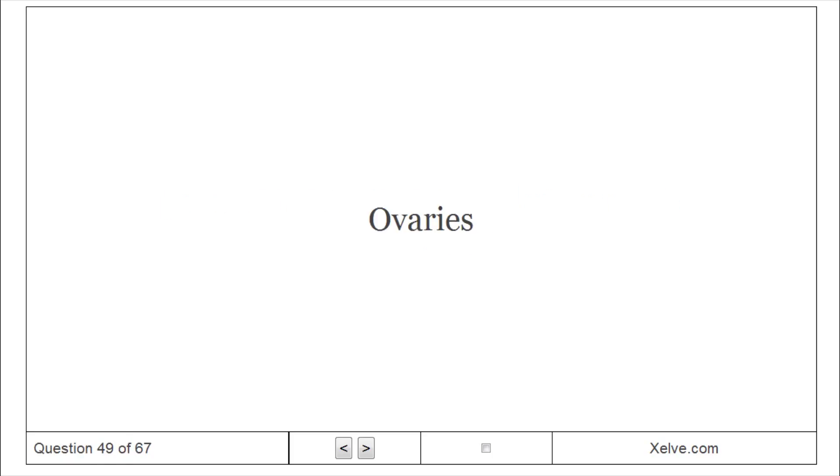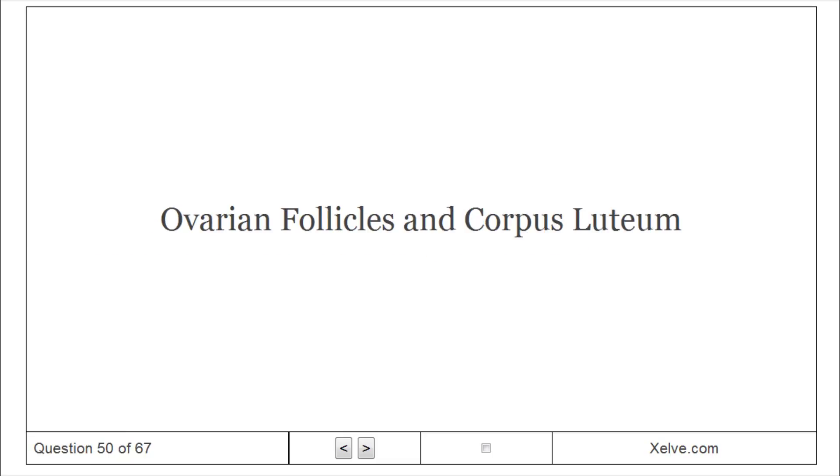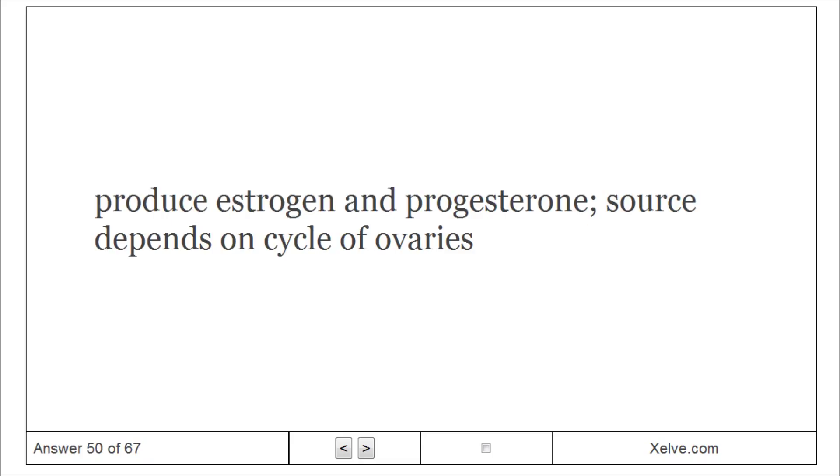Ovaries: located in lower abdominal pelvic cavity. Ovarian follicles and corpus luteum produce estrogen and progesterone. Source depends on cycle of ovaries.